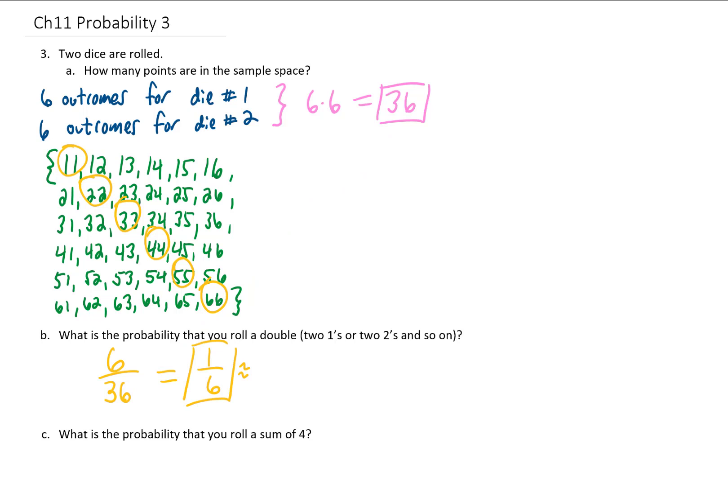If you wanted to type it into your calculator, you would get 0.1666 repeating. The next problem asks, what is the probability that you roll a sum of four?